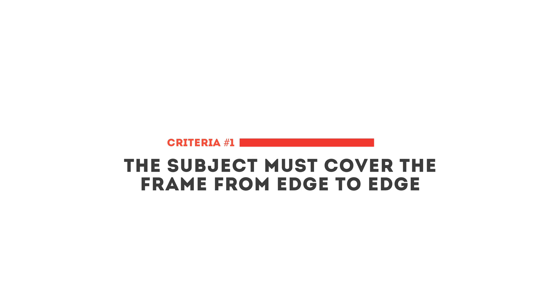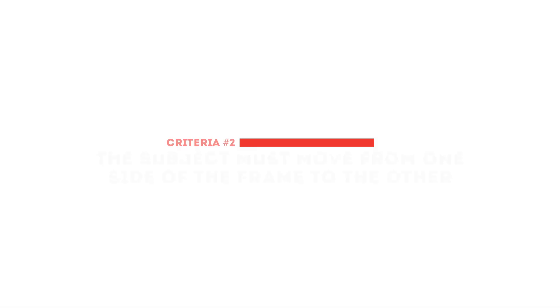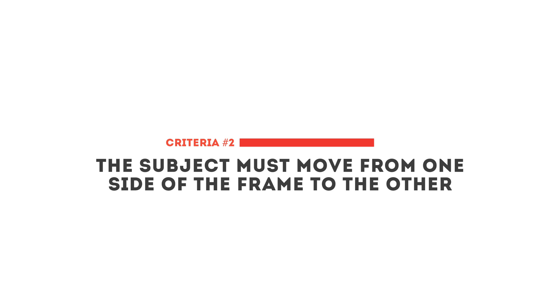There are three main things that I look for. The first one is the subject must cover the frame from edge to edge. If the subject of your transition doesn't cover the frame, your mask has nowhere to go and you won't be able to pull this transition off in a convincing way. The second thing is that the subject must move from one side of the frame to the other. For example, if your subject covers the entire frame from top to bottom, then you want the subject to enter your frame on the left or the right and move across your screen to achieve a smooth wipe transition.